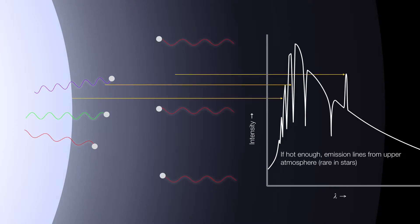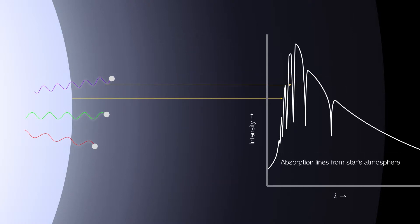Now, in some rare circumstances, there may be some portions of the star, or maybe there's a shell around the star, that is superheated and gives off emission as a result. However, this is very rare in stars, and most stars' spectra look like this — the absorption spectra that you see here.